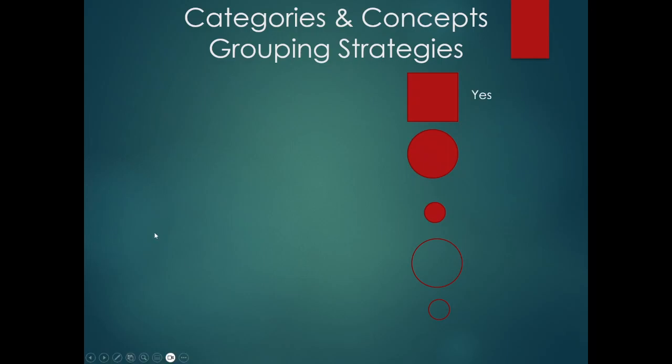If I told you that the big red square is a member of the concept, you're going to start to try and figure out what characteristics make up this concept. The big red square is a member of the concept. The big red circle is also a member of the concept. The small red circle is not a member of the concept. The big green circle is a member of the concept. The small green circle is not a member of the concept.